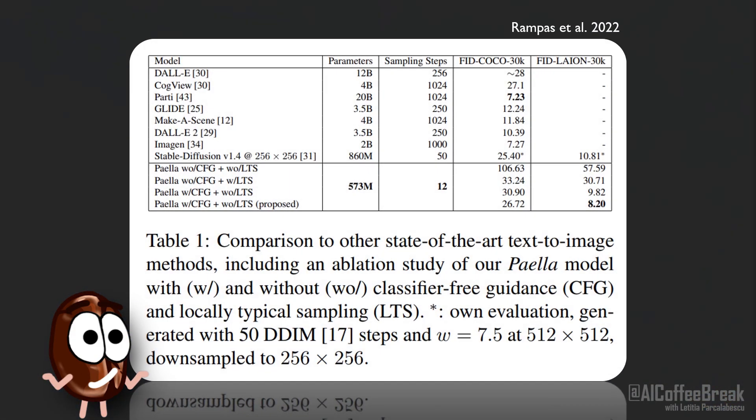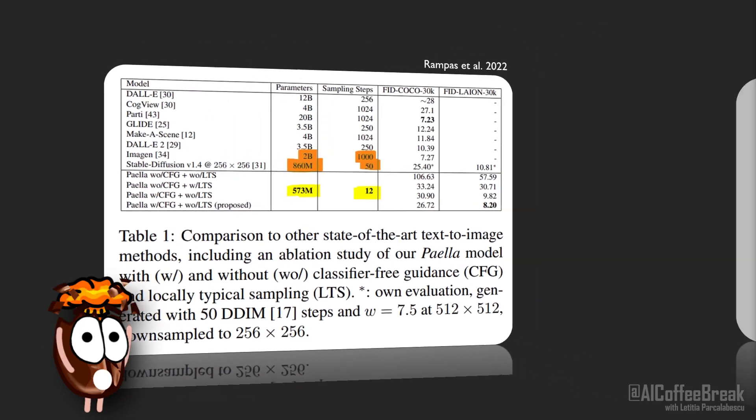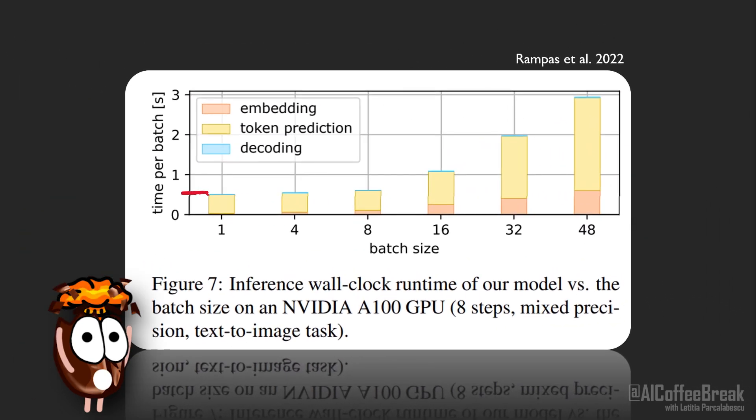Maybe these generations are not what you see from carefully prompted diffusion models, but keep in mind that Paella is relatively small in terms of numbers of parameters compared to existing diffusion models, and need way less sampling steps, and it takes half a second to generate an image.